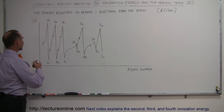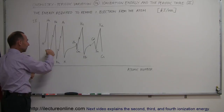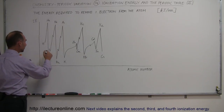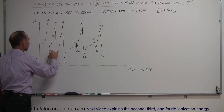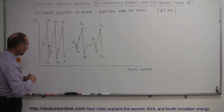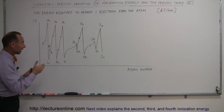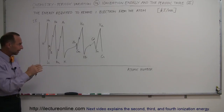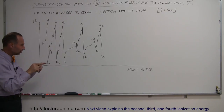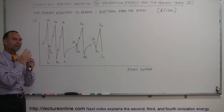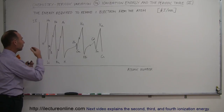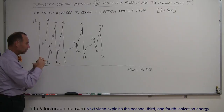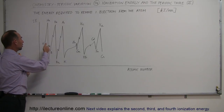From lithium we go to beryllium, and notice these little jagged indicators — something interesting is going on. For beryllium, we have an additional electron with no more shielding than for lithium — we still have the two electrons in the innermost energy level, so the shielding is the same. But now we have an extra charge in the nucleus, and those two electrons are pulled a little bit closer because of the stronger attractive force, so the ionization energy goes up.